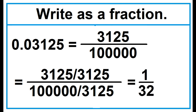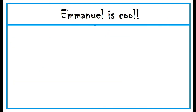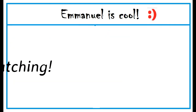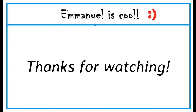3,125 divided by 3,125 is equal to 1. 100,000 divided by 3,125 is equal to 32. So 0.03125 is equal to 1 over 32.